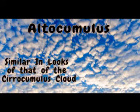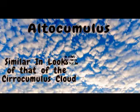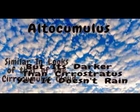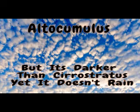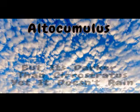Now we're going to be talking about altocumulus. Just like its higher altitude cousin, it consists of patches or layers of ball-shaped clouds, but it's mostly water droplets. These clouds are darker than cirrostratus and are mostly made up of water droplets, yet they don't actually rain.